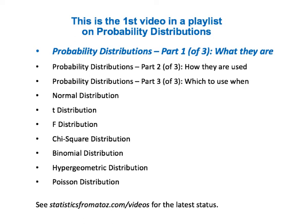In addition to these three, the book also has individual articles on each of the seven families of distributions shown here. My plan is to eventually produce videos for each of them. See Statistics from A to Z dot com slash videos for the latest status of this work.